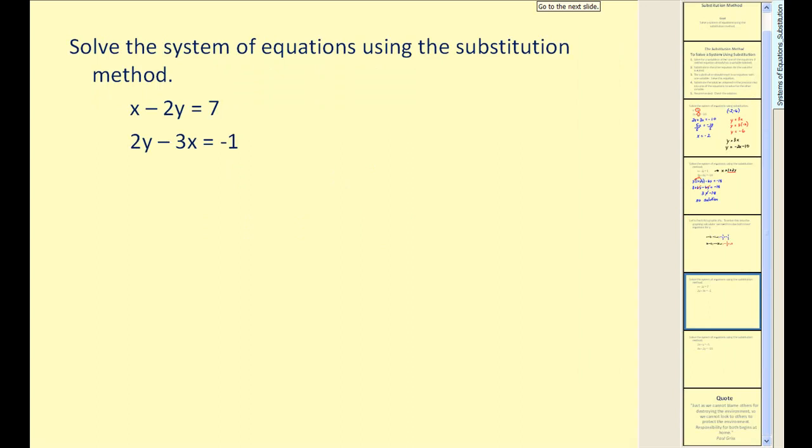Let's take a look at a couple more. So we first have to solve one of the equations for one of the variables. We can see it would be easier to solve this first equation for x. Let's do that by adding 2y to both sides.